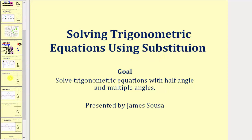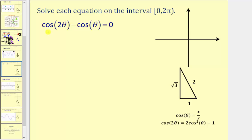Looking at our first example, we want to solve cosine two theta minus cosine theta equals zero. Notice in this example, both angles are not double angles. Here we have a double angle of two theta, and here we have just theta. So we're not going to let u equal two theta. We're actually going to perform a substitution for cosine two theta. We'll use the identity cosine two theta equals two cosine squared theta minus one.